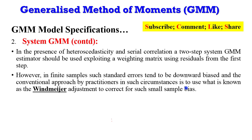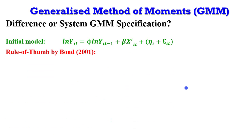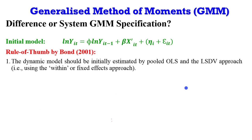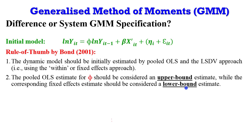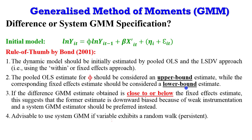How do you decide between difference and system GMM? The rule of thumb proposed by Bond (2001) is to first estimate the initial model by pooled OLS and by LSDV — the fixed effects approach. The pooled OLS estimate for φ will be considered an upper bound, while the fixed effects estimate will be the lower bound. If the difference GMM estimate is close to or below the fixed effects estimate, this suggests downward bias due to weak instrumentation, and a system GMM estimator should be applied. It is also advisable to use system GMM if the model exhibits a random walk.